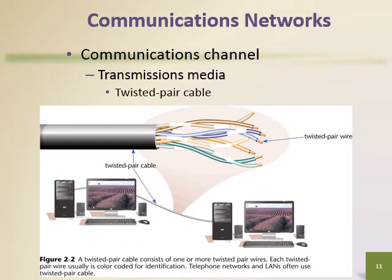A communications channel is the path that data follows as it is transmitted from the sending equipment to the receiving equipment in a communications network. Communications channels are made up of transmission media — the physical materials or other means used to establish a communications channel. The most widely used transmission medium is twisted pair cable, which consists of pairs of plastic-coated copper wires twisted together. Standard telephone lines also use twisted pair cable. Other examples of transmission media include coaxial cable, fiber optic cable, microwave transmission, communication satellites, and wireless transmissions.